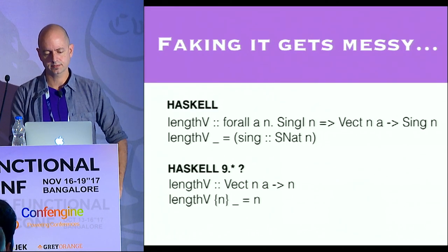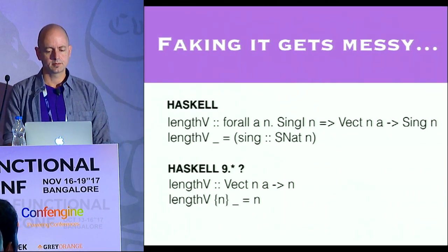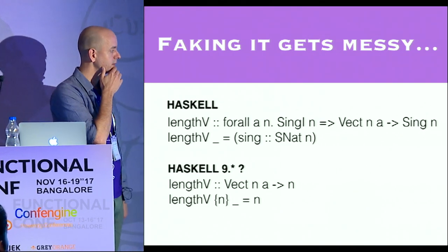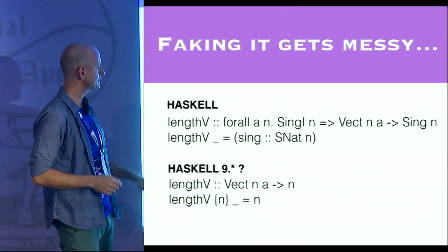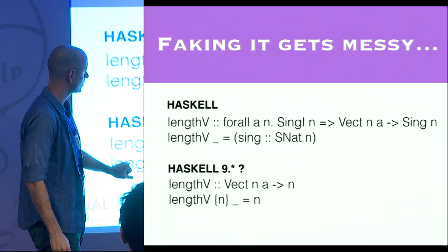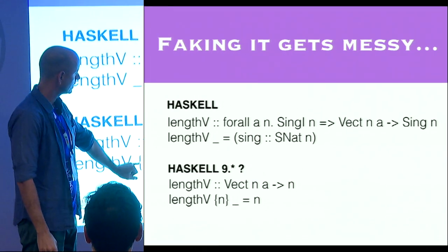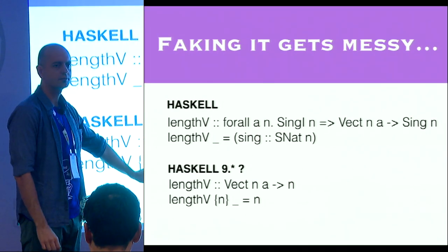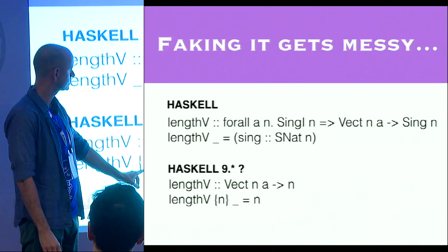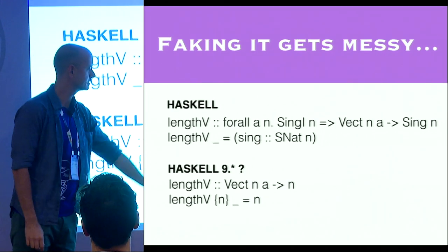That's the end of our code. Faking it gets pretty messy. It would be nice if you could easily imagine something more like this, where I just cleanly ask the compiler to grab that N out of there and return it.